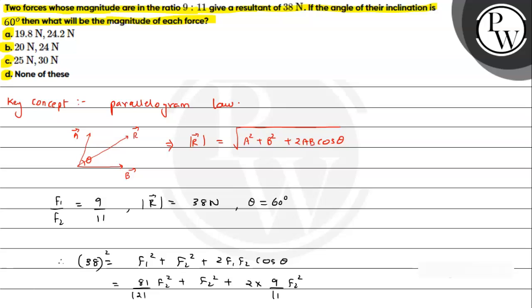38 will be equal to the square root. Cos theta will be half, so this value of 38 squared comes out to be 1444 and that will be equal to 81 by 121 f2 square. If we take LCM here we have 121, so 11 multiply 99, that's 180 upon 121 f2 square.